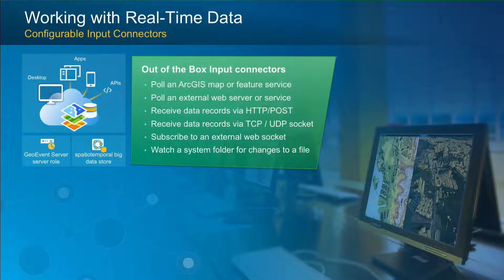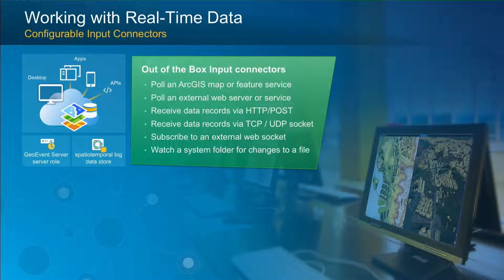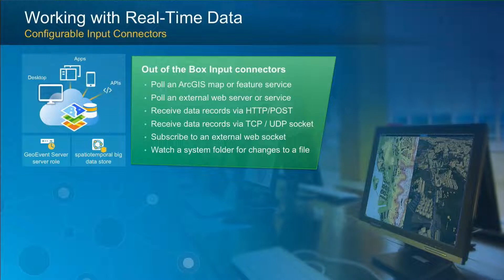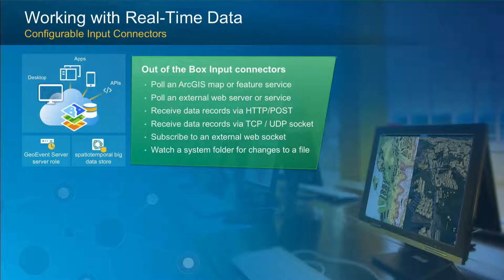If you're working with an external data vendor — say subscribing to AVL provider data for vehicle location — you can pull from an external website. We can also receive data being sent to us, for example from Verizon Network Fleet, by exposing a REST endpoint they push data to on their schedule. You can also connect over TCP or UDP sockets, or watch for files on a local folder — if a database exports a CSV at a regular interval, GeoEvent Server can ingest that data as soon as the file is created.